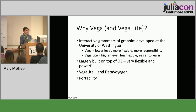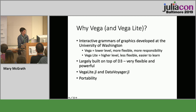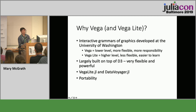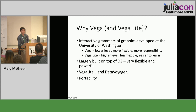In the Julia ecosystem, we have Vega-Lite.jl and DataVoyager.jl. One of the other big pros to Vega is it's very portable. There is a Python package, R package, Elm, Scala, JavaScript — you name it. You can pass around a Vega spec to one of your friends and they can use it in whatever language they know, even if they are not yet a Julia user.